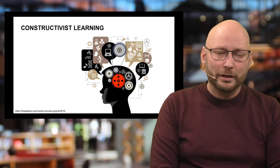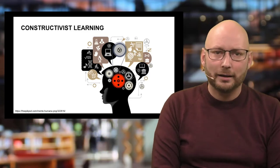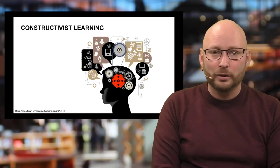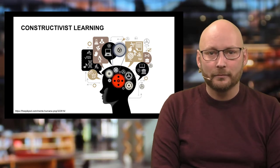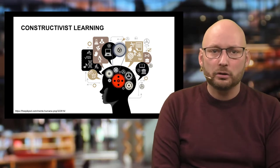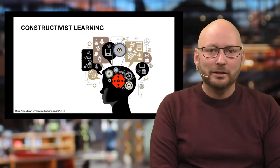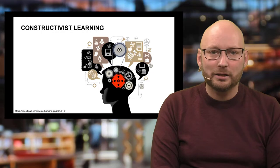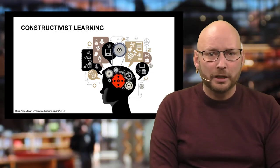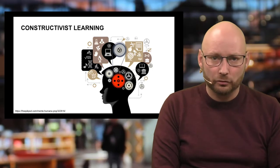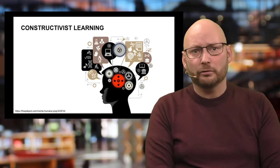So when a person learns, they do so by observing and interacting with their surroundings with the aim of constructing their own understanding of something. In cognition, people usually talk about assimilation and accommodation. Assimilation means that new information can be incorporated into existing structures, while accommodation means that you need to adapt your structures — meaning your understanding of an area — in order to progress in learning.